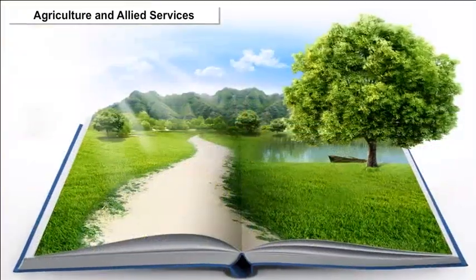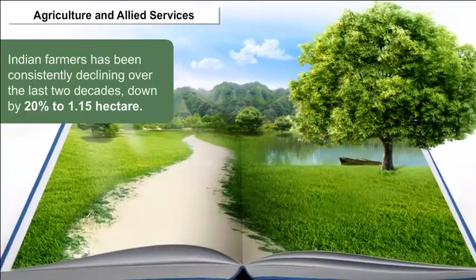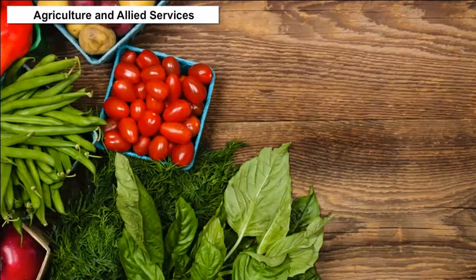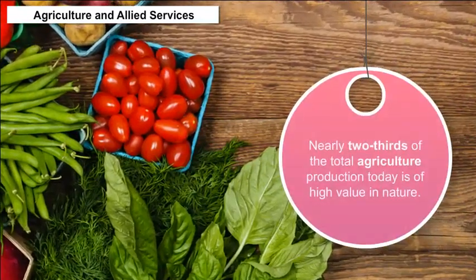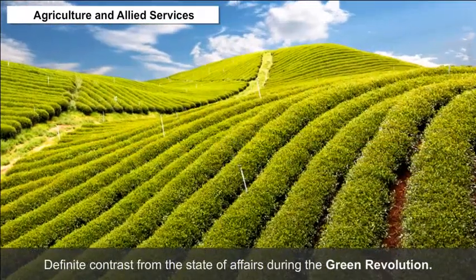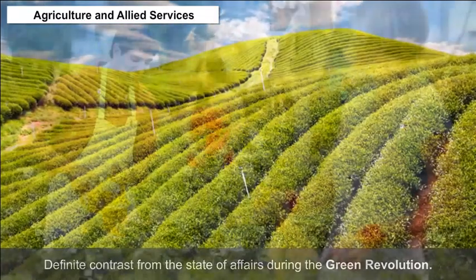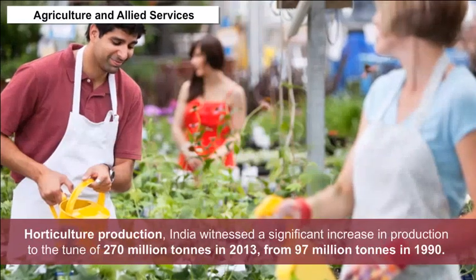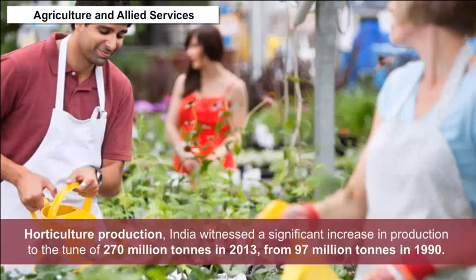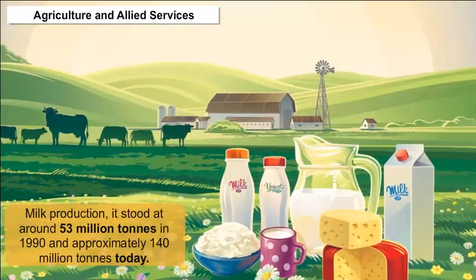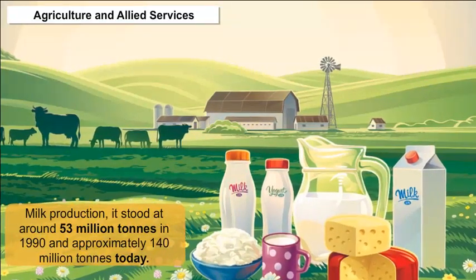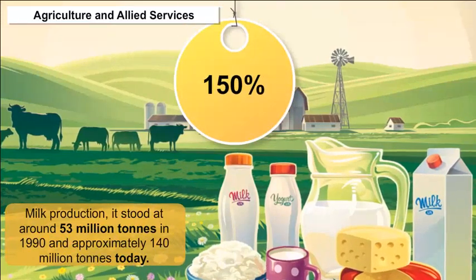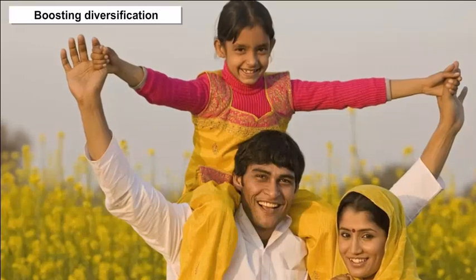The average land-holding of Indian farmers has been consistently declining over the last two decades, down by 20% to 1.15 hectare. Nearly two-thirds of the total agriculture production today is of high value in nature, a definite contrast from the state of affairs during the Green Revolution. India witnessed a significant increase in horticulture production to 270 million tonnes in 2013, from 97 million tonnes in 1990. Similarly, milk production stood at around 53 million tonnes in 1990 and approximately 140 million tonnes today, witnessing a growth of more than 150%.